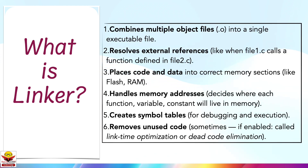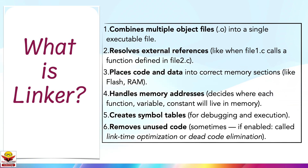Now that we know what a linker is, let's quickly see what exactly the linker does behind the scenes. First, it combines all your object files into one final executable. Second, it resolves all external references. Third, it decides where your code and data should live in memory. Fourth, it manages memory addresses by giving each function and each variable a real address inside the memory. Fifth, it creates a symbol table — think of it like a quick reference book for each function and variable.